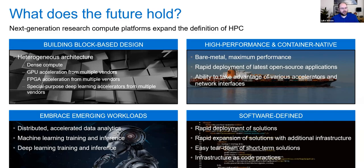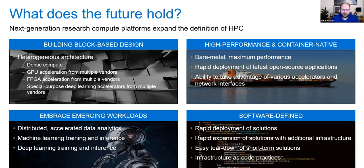FPGA acceleration from different vendors, and if anyone's been keeping up with the deep learning ASIC landscape, there are dozens of startups trying to build special-purpose ASICs or FPGA configurations that make deep learning more efficient. Deep learning and machine learning are really another type of HPC workload — HPC is the infrastructure we run it on. Simulation and modeling has been the traditional workload set, but now we're building artificial intelligence models as another workload on top of those HPC environments. Because of that, we need to embrace more rapid software deployment techniques.